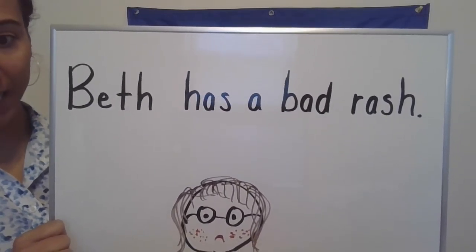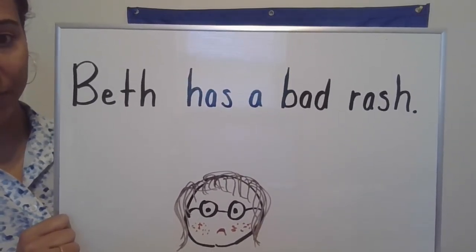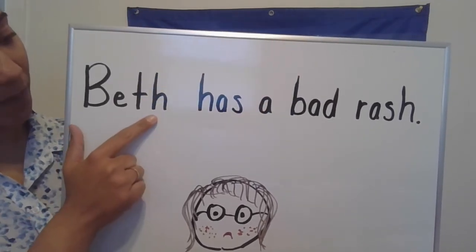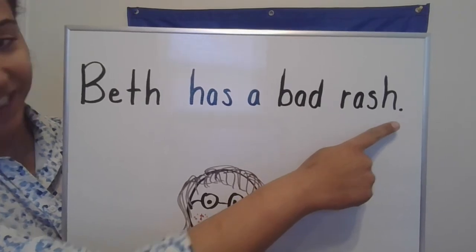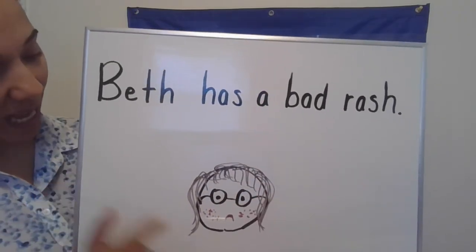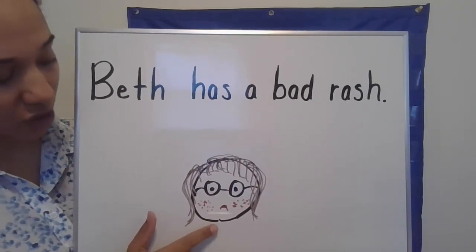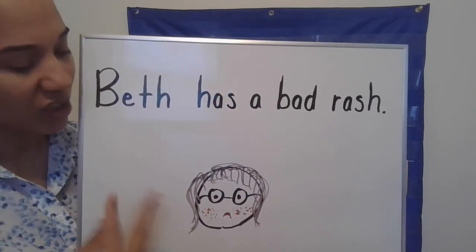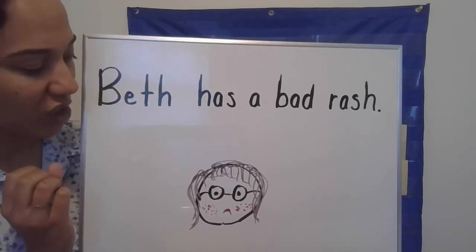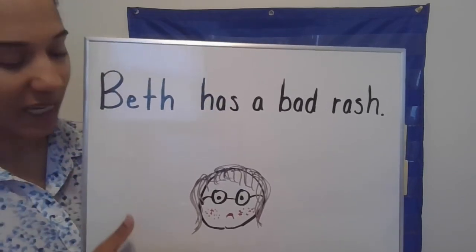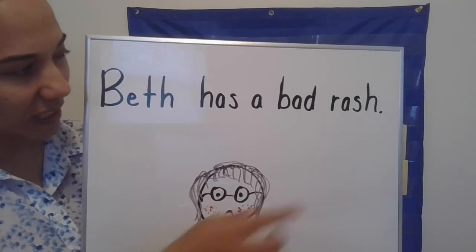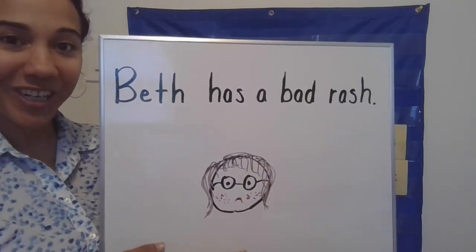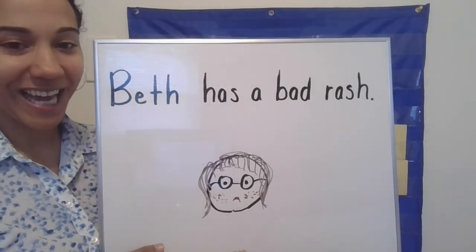Beth has a bad rash. Do you see the digraphs in the sentence? If you found it at the end of the word Beth and at the end of the word rash, excellent work! I made a little illustration of my friend Beth with little spots, because a rash is like when your skin gets bumpy, itchy, and red and irritated. Thank you for working with me today — you guys did a great job! See you next time.